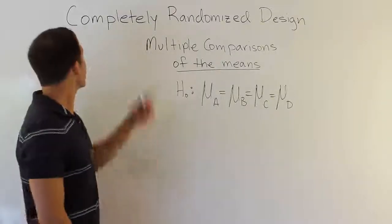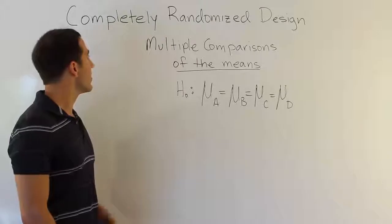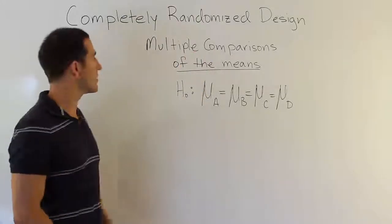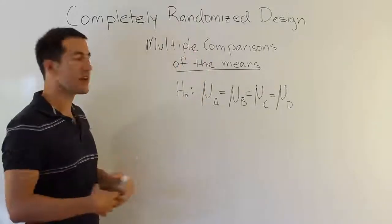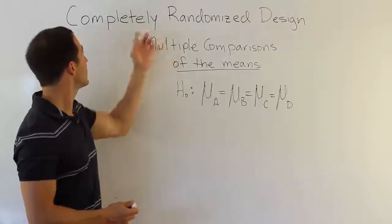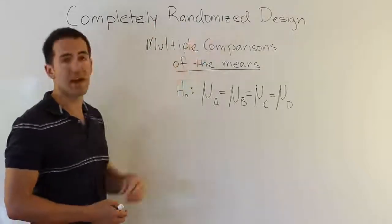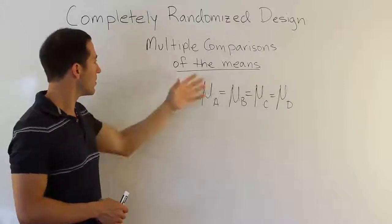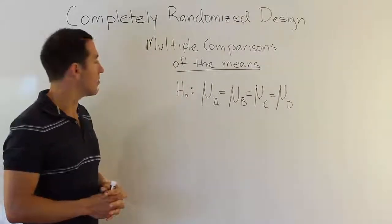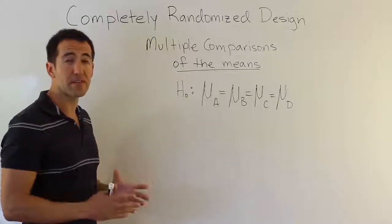We're looking at a video again related to the completely randomized design experiments, but now we're going to be talking about multiple comparisons of the mean. What we're doing is discussing the consequence of rejecting a null hypothesis when doing the ANOVA procedure for a completely randomized design experiment. These multiple comparison procedures come up whenever you reject the null hypothesis.